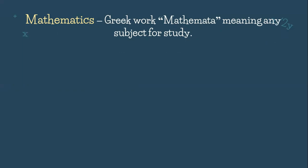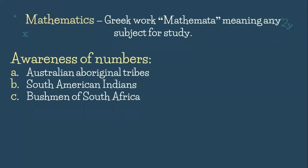Mathematics came from the Greek word 'mathemata,' meaning any subject for study. As you can see, my dear students, even before prehistoric times, there was already math — it's just that they didn't yet know that the name for that subject was math. So actually, in the early times, people already had an awareness, in whatever country, that there are numbers. It's just that they didn't have the formality that we have now. For example, the Australian Aboriginal tribe had an awareness of two numbers: they had the concept of one and two. But beyond two, they only had the word 'many' or 'much.'